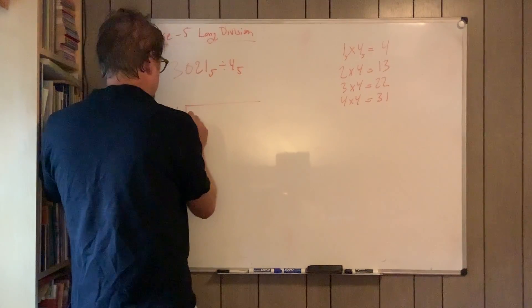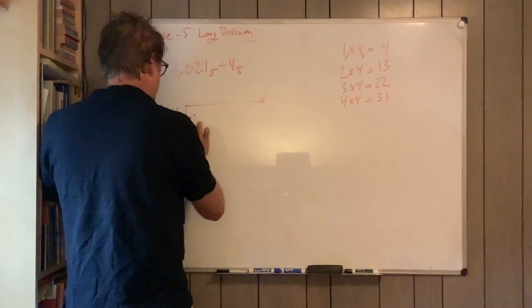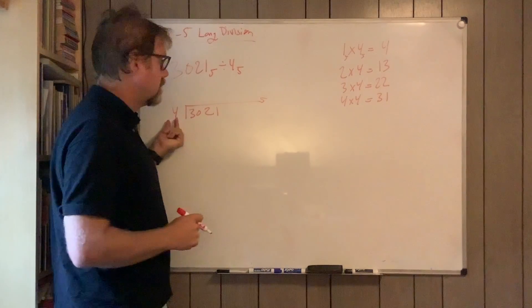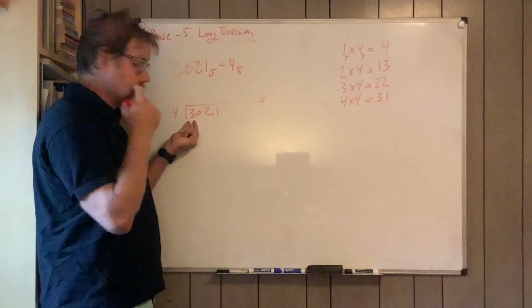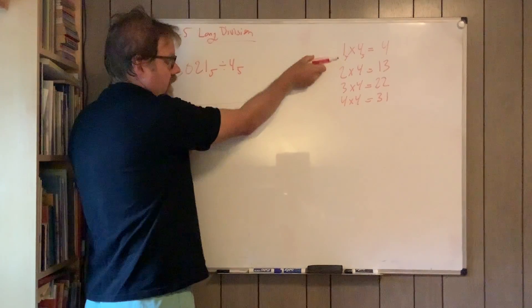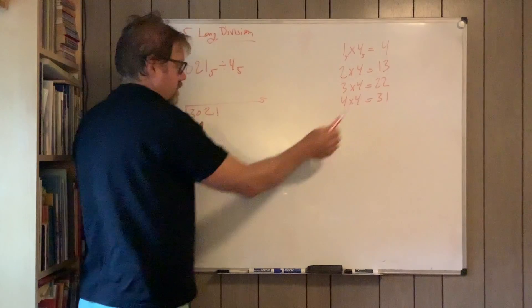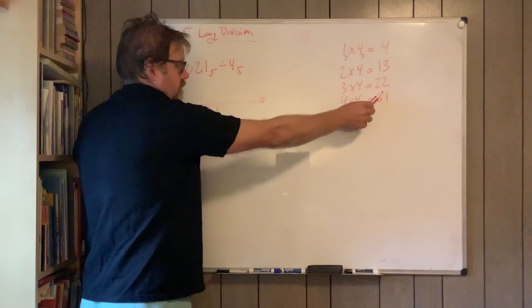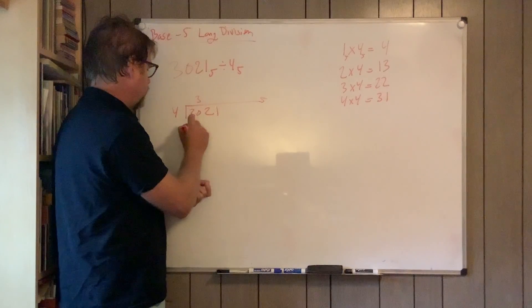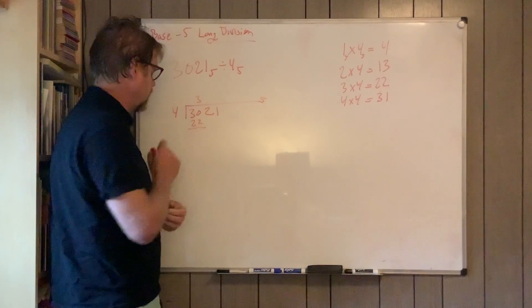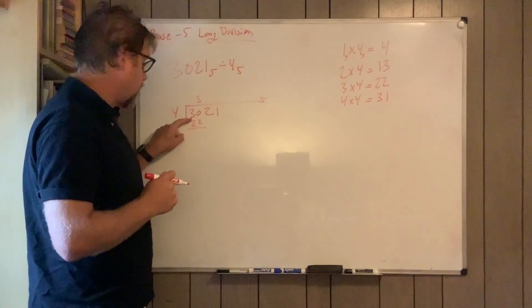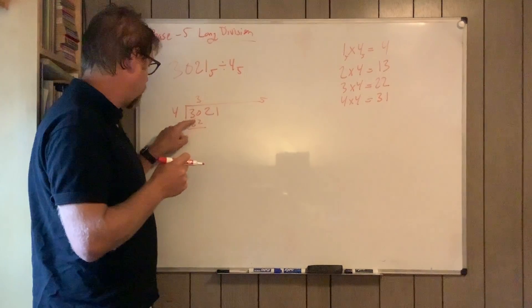I'll put the 5 over here, 3021. 4 doesn't go into 3, so 4 goes into 30. I'm going to scan down until I'm between these two or I hit it exactly, and I don't. So 3 times 4 is 22, and then I subtract. Remember, 3 nickels no pennies, 2 nickels 2 pennies.